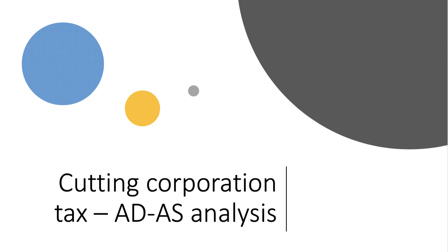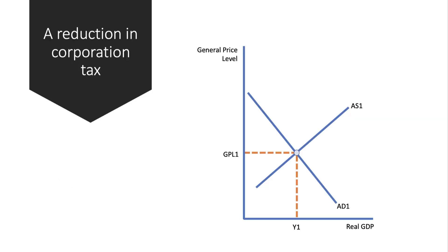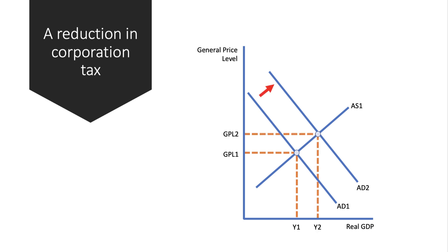You can use AD-AS analysis to show this. Starting from an initial equilibrium at national output Y1, if there is a fall in corporation tax the aggregate demand curve is likely to shift to the right. Other things being equal, that increases real national output, but it might also increase inflationary pressure — depending on the elasticity of aggregate supply.